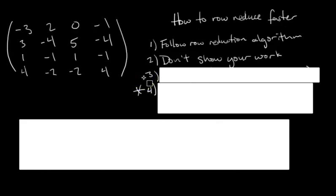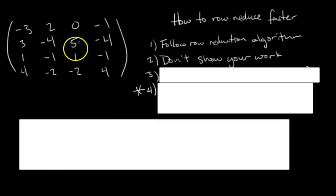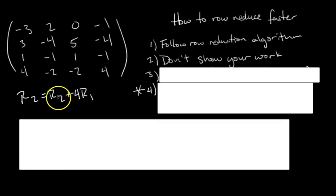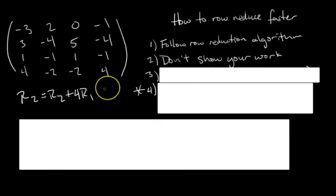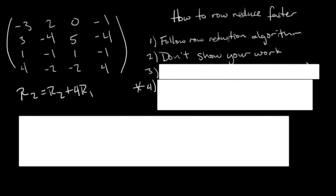The second tip is: don't show your work. If the problem says show your work for full credit, then you have to. But if you don't have to, don't. What I mean by showing your work is writing things like 'row 2 equals row 2 plus 4 times row 1' — you don't have to show that. I'm confident you can do this in your head. Obviously you still have to show your intermediate matrices, but you don't have to show the explicit row operation notation.